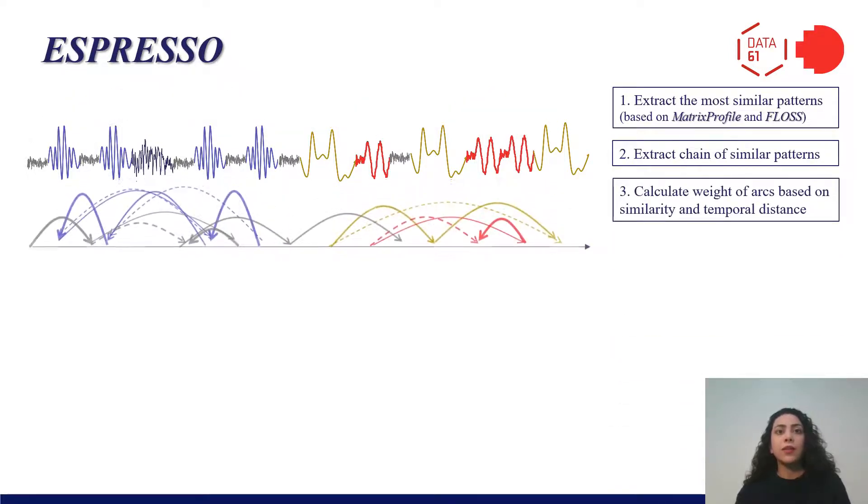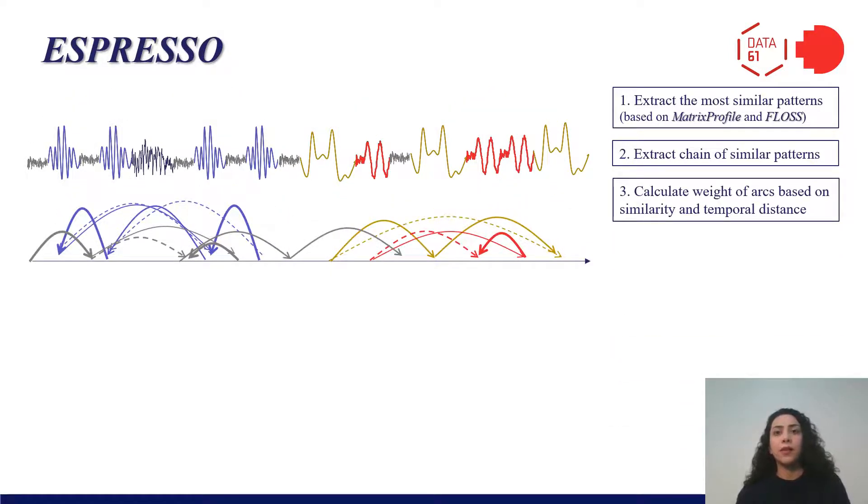Next, we assign a weight to each extracted pair of similar patterns based on the similarity measure and temporal distance. In this picture, each arc shows a pair of most similar patterns. The thicker arcs show higher similarity and lower temporal distance.